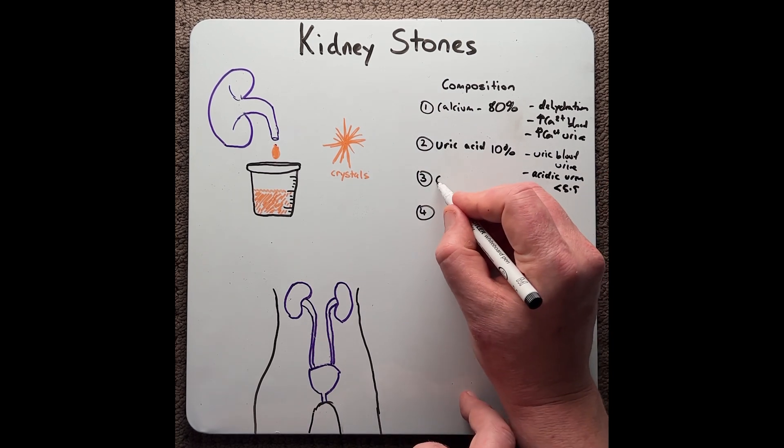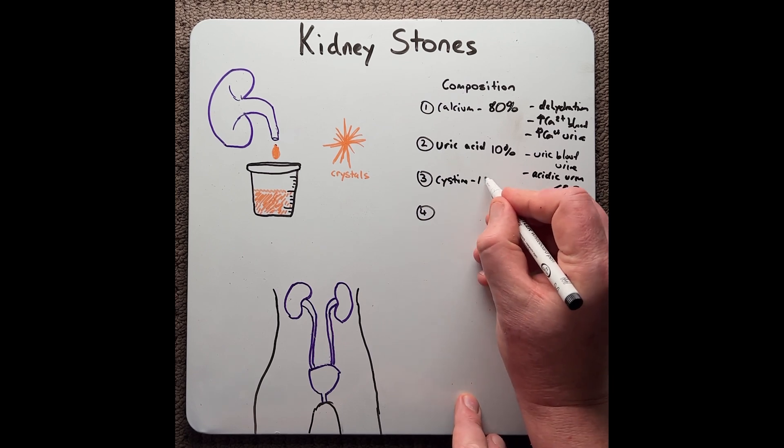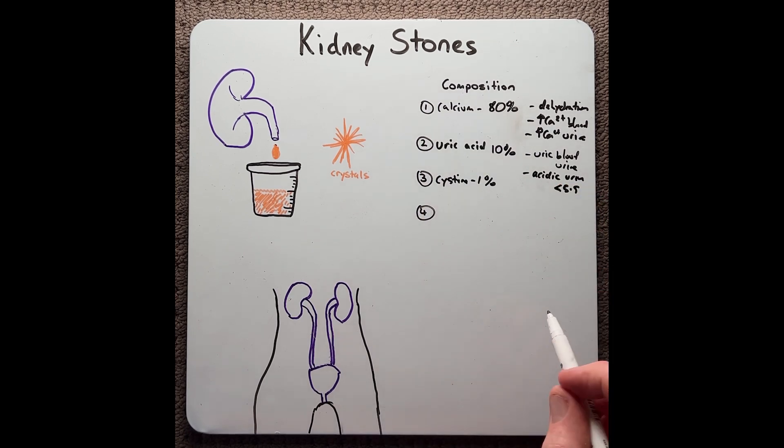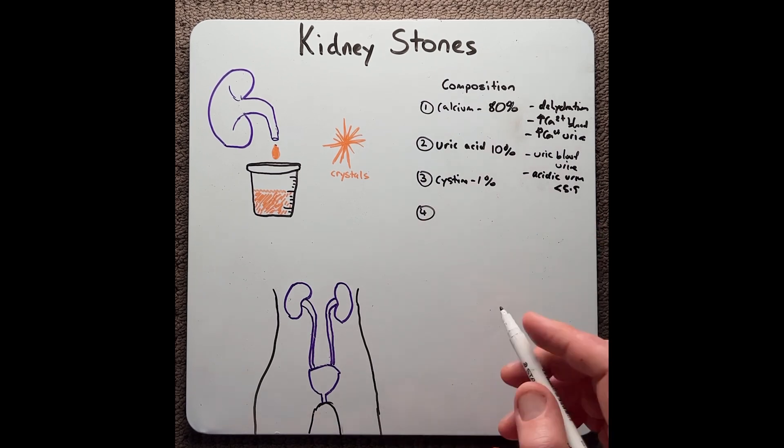The next type of stone is cysteine stones. This is approximately 1% of all stones, and this seems to be associated with conditions that decrease the reabsorption of amino acids at the kidneys, particularly cysteine.